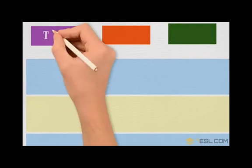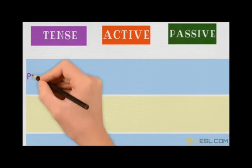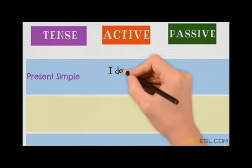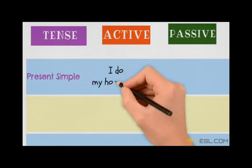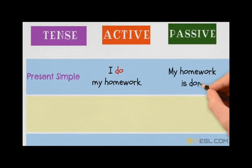We will start with simple present tense, first in active and then in passive. In simple present, the active voice is 'I do my homework.' To change it to passive: 'My homework is done.' We change the first form of the verb into the past participle.